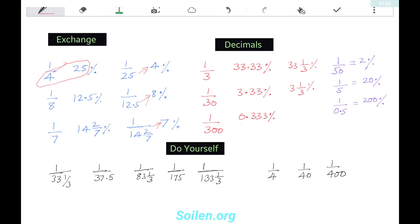Now, decimals. We have learned 1/3 is 33.33 percent. Then 1/30 is 3.33 percent. 1 upon 300 is 0.33 percent. And 1/50 is 2 percent. Then 1/5 is 20 percent. 1 upon 0.5 is 200 percent. Now you can do all these and find the answer.